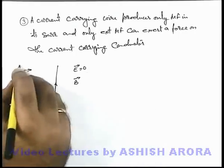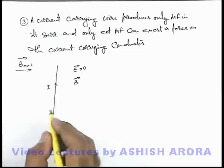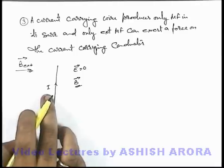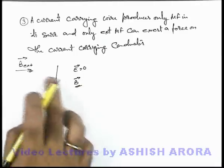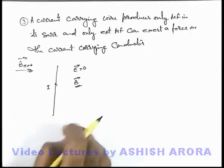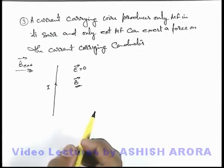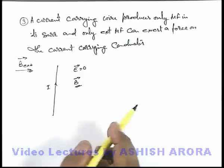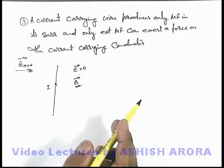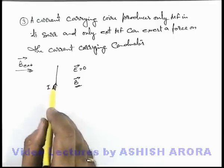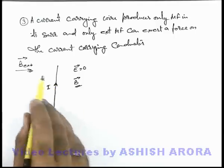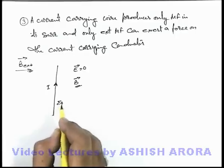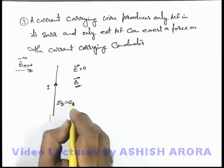So when an external magnetic field B-external vector is applied, this external magnetic field will interact with the magnetic induction produced by the wire, and hence due to this interaction the wire will experience a net magnetic force on it. So always remember: in case of a static charge, only electric field can exert a force on it. In case of a moving charge, both electric and magnetic fields can exert a force on it. And in case of a current carrying wire, only magnetic field can exert a force on it. Electric force will not be exerted on the wire because the net sum of all charges on this wire is equal to zero, as it is electrically neutral.